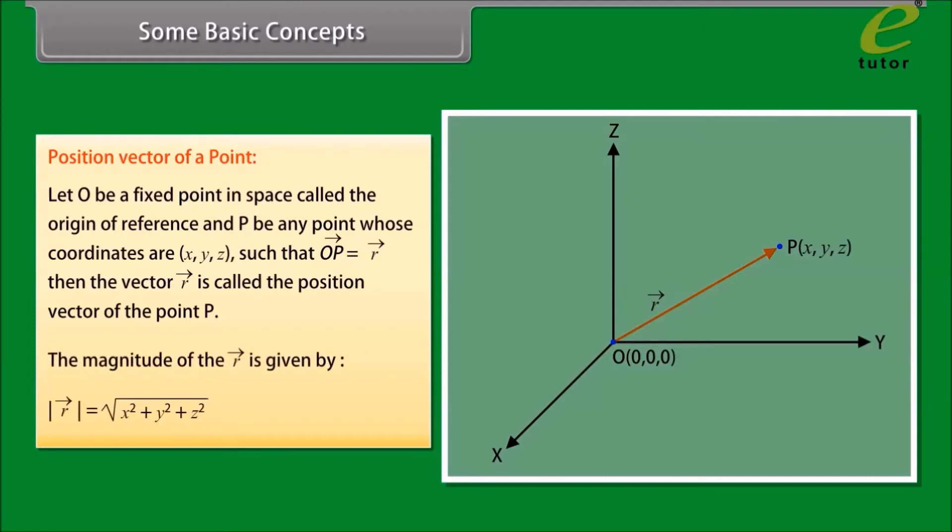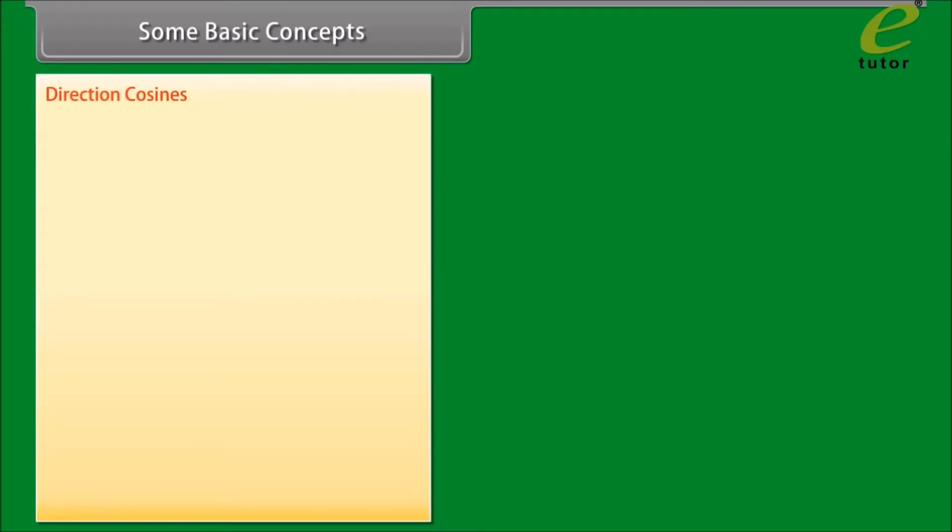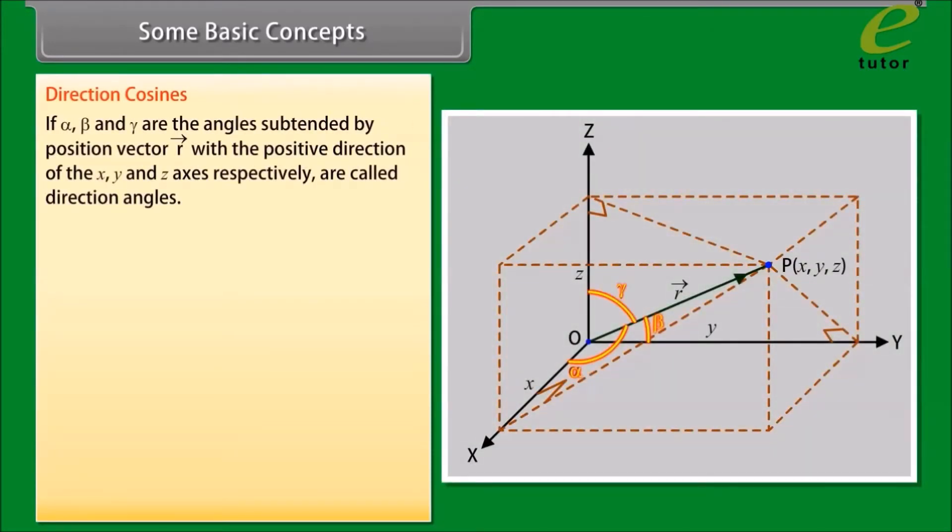The magnitude of the vector R is given by mod of vector R equals square root of X square plus Y square plus Z square. Direction cosines: if alpha, beta, and gamma are the angles subtended by position vector R with the positive direction of X, Y, and Z axes respectively, are called direction angles.